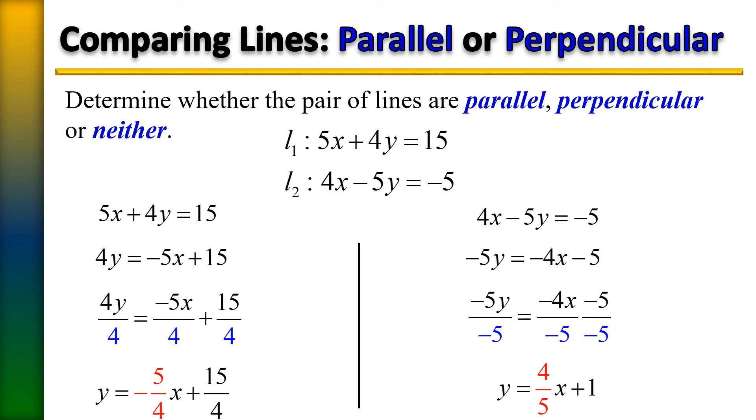we see that they are opposite reciprocals of each other, negative reciprocals of each other, which means that one sign is negative, one of them is positive, and also one of them is flipped. And those are the characteristics of a perpendicular line. So, we would say that these two lines are perpendicular.